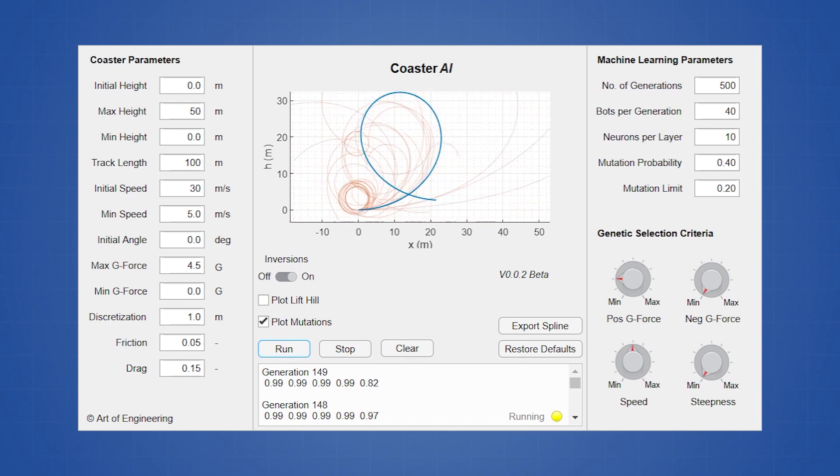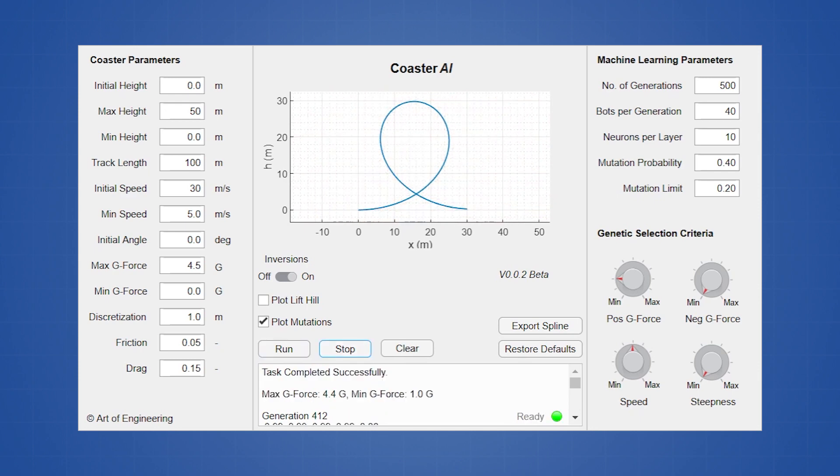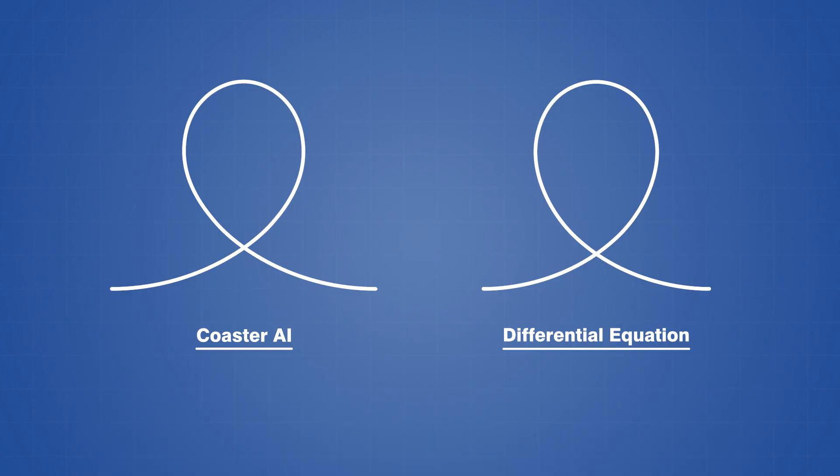I think one of the most important accomplishments so far is actually getting the program to design vertical loops, since this is something that typically requires complex physics and math formulas. By using a genetic algorithm, Coaster AI can learn how to make optimal loop shapes that are almost identical to the modern teardrop shapes that are commonly used today, which just goes to show that it is possible to design rollercoasters with artificial intelligence.